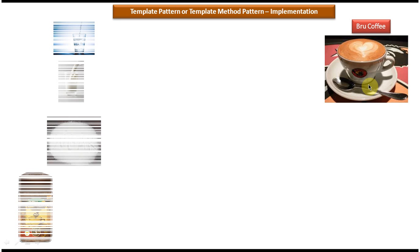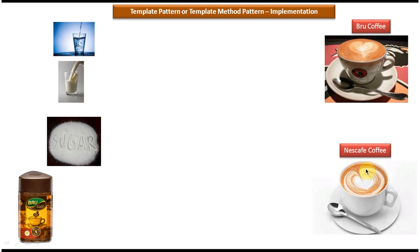Now we will see an example where we can use the Template Design Pattern. Suppose I want to prepare brew coffee. I have to boil water, then add milk, then add sugar, and finally add the brew coffee powder. So I have to use these ingredients in sequence to prepare the brew coffee.